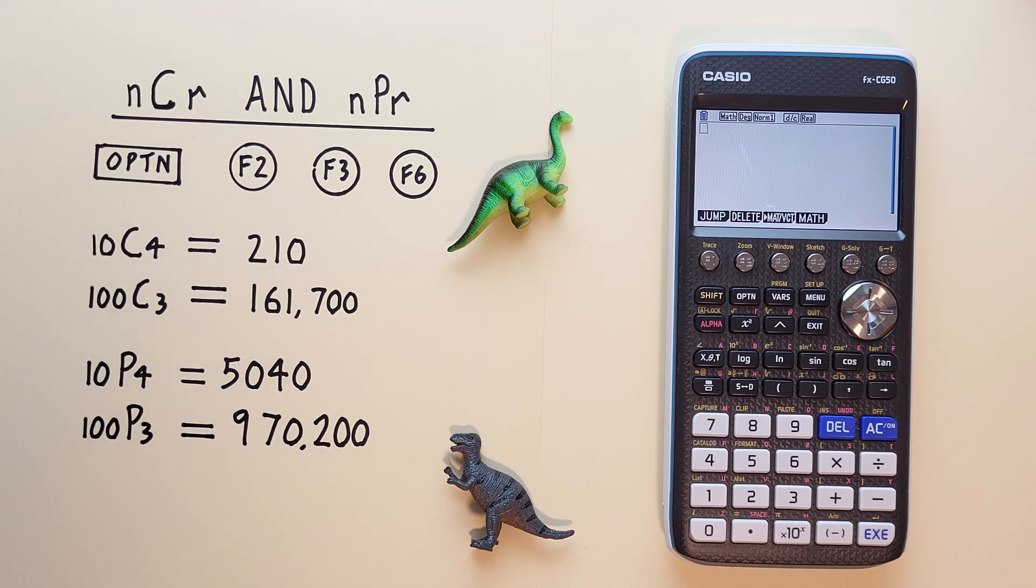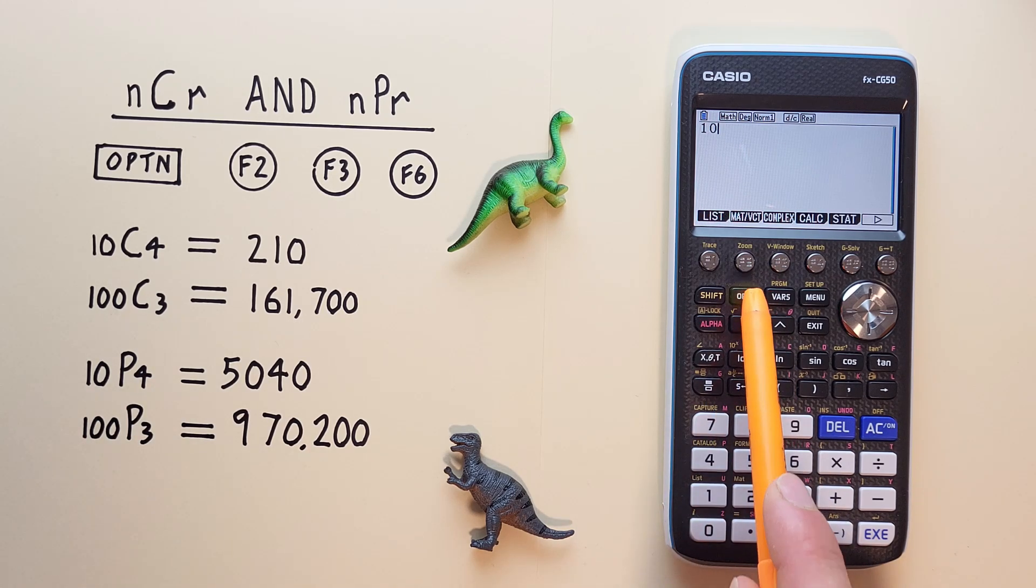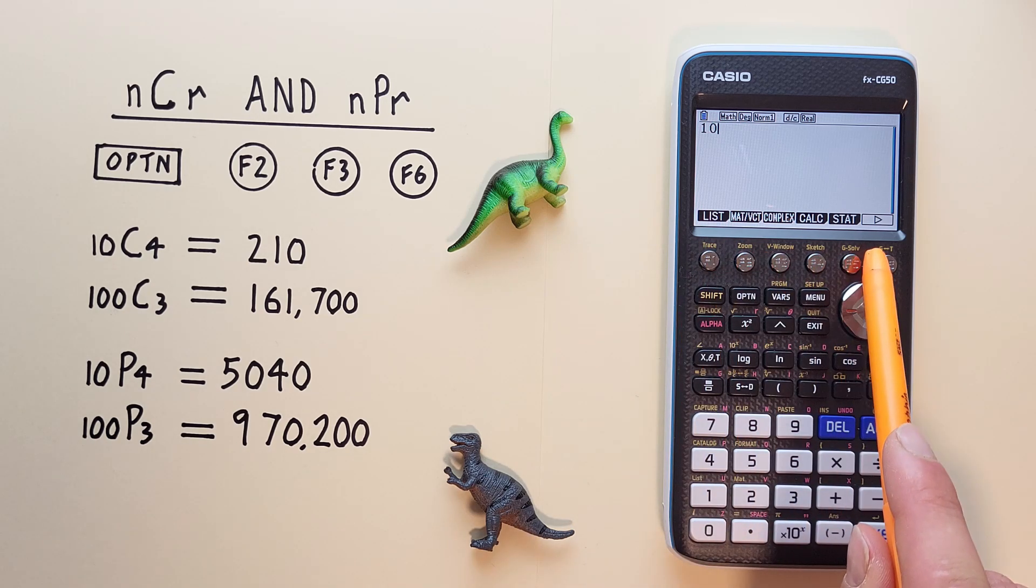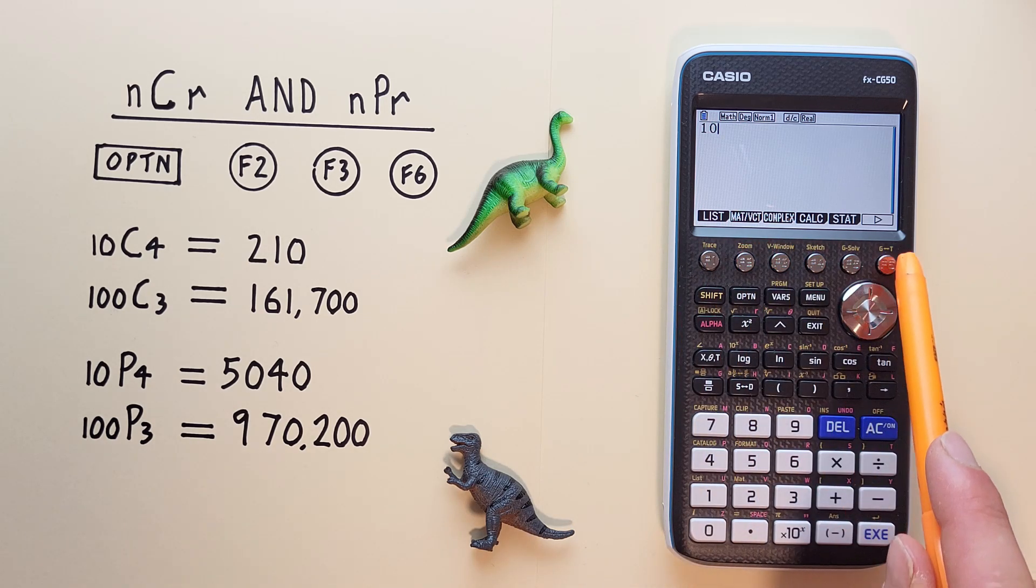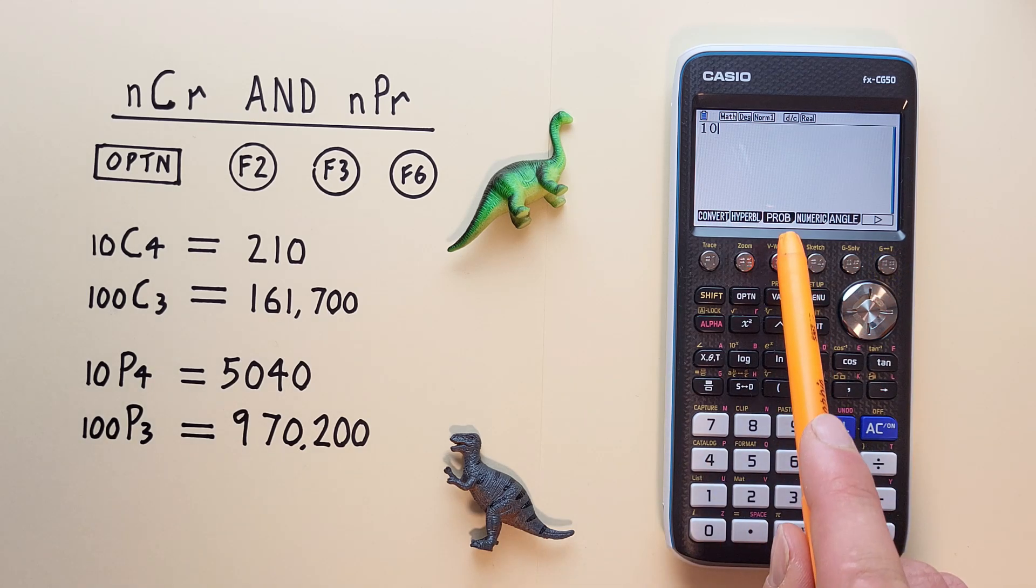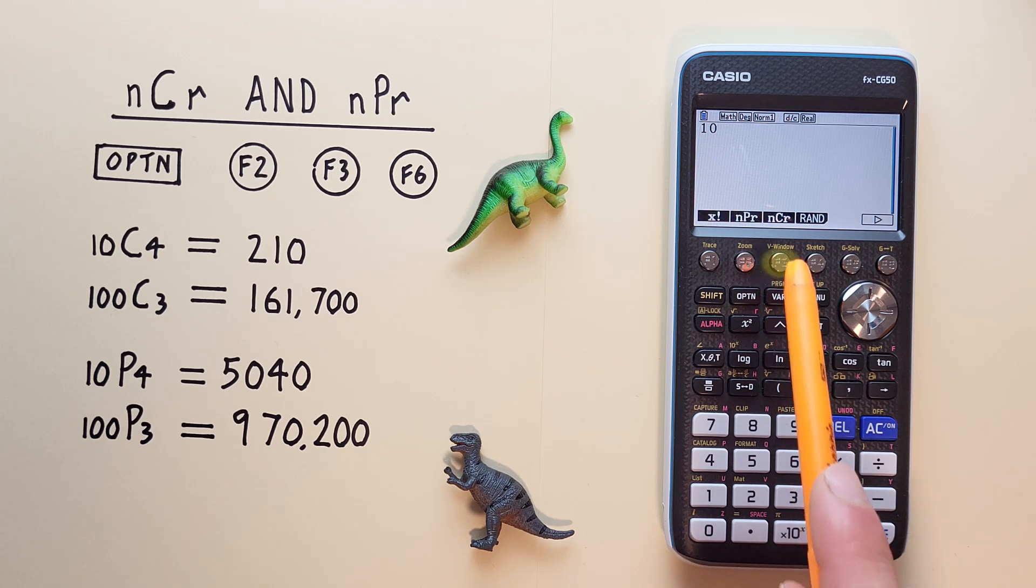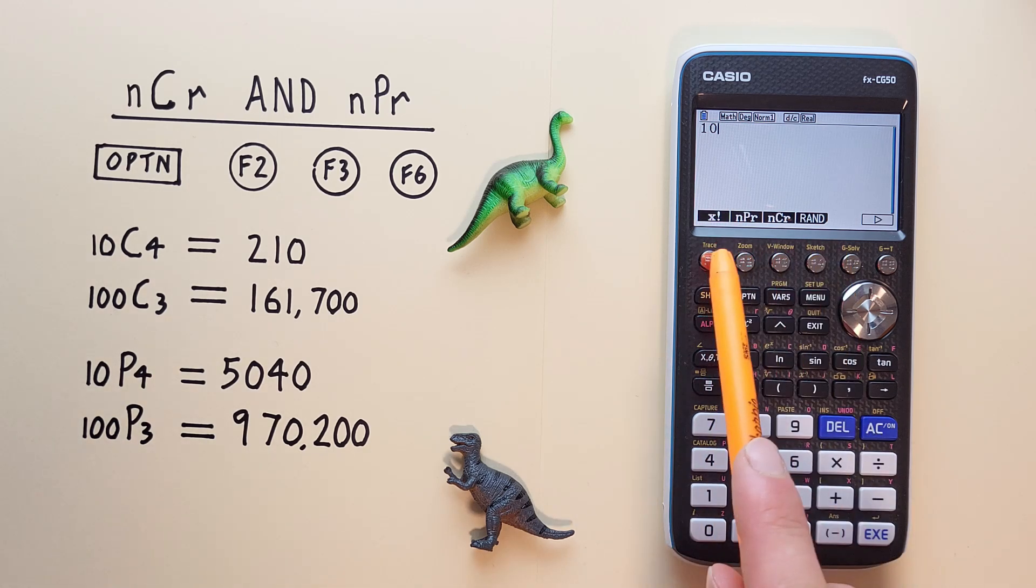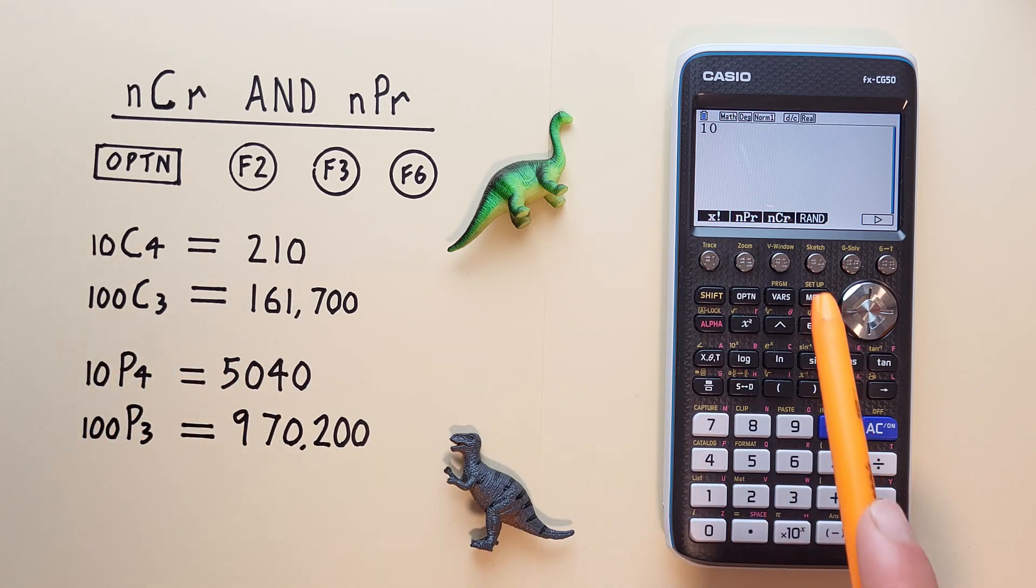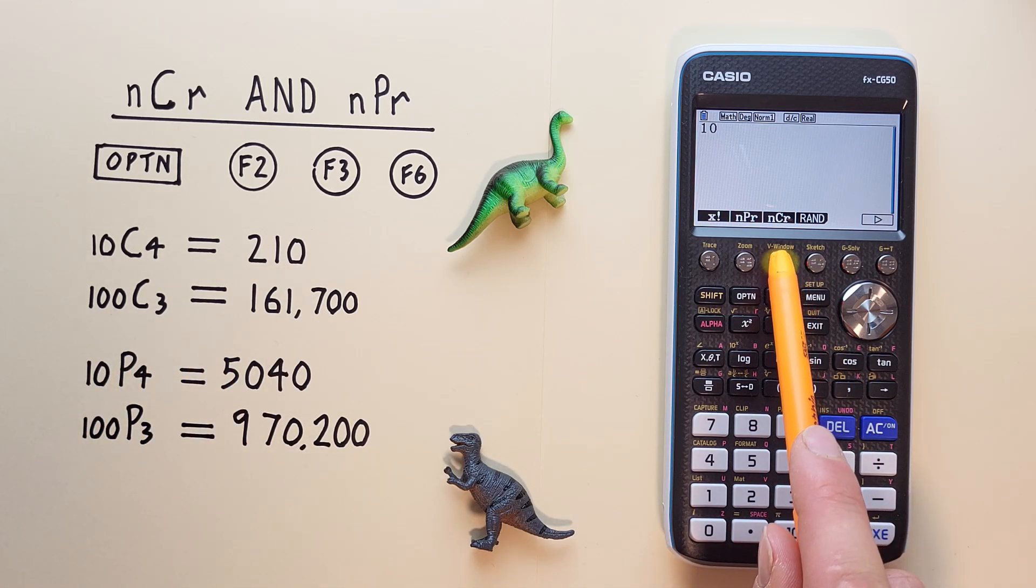To do this on this calculator, first we enter the 10, or the total number of objects, and then we press the Option key. That brings us to this menu here. We don't see the option we're looking for, so we hit F6 with the arrow to go to the next menu, and now we see PROB, or the probability menu. We press F3, and that brings us to this menu here. For combinations we want nCr, or F3 here, so we hit that.